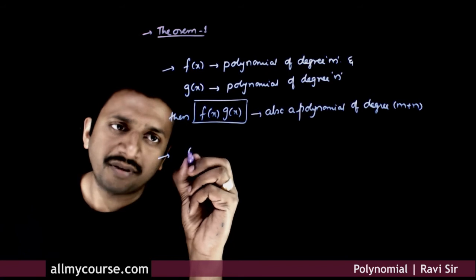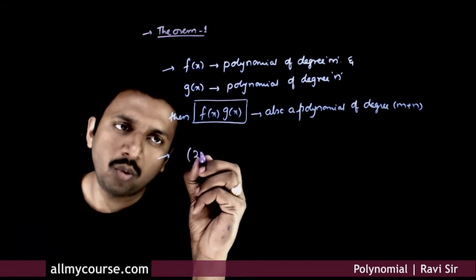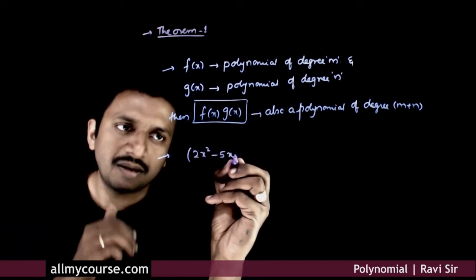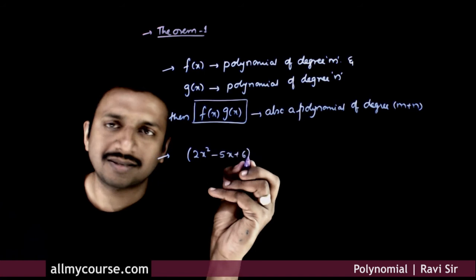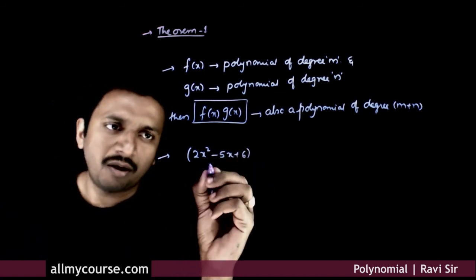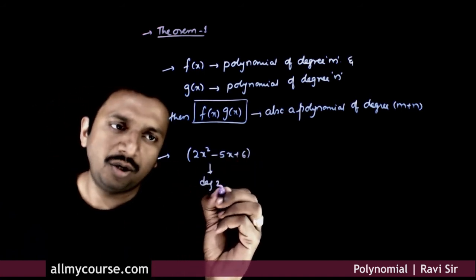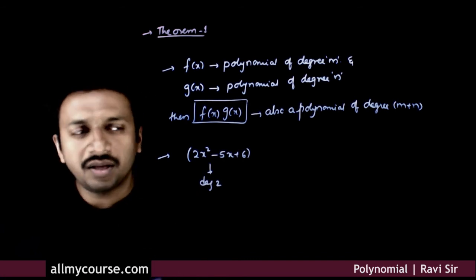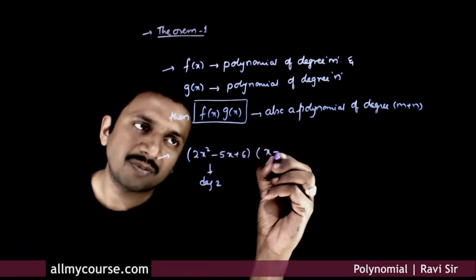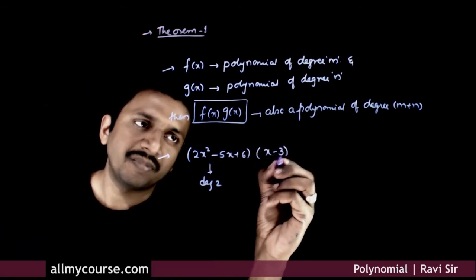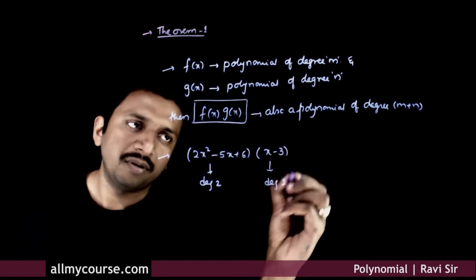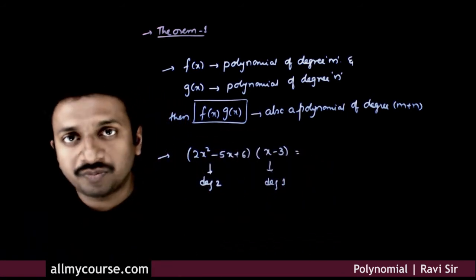For example, if you have a quadratic 2x squared minus 5x plus 6, that is a polynomial of degree 2. And if you have a polynomial of degree 1, x minus 3, this is a polynomial of degree 1. Now if you multiply these two together,